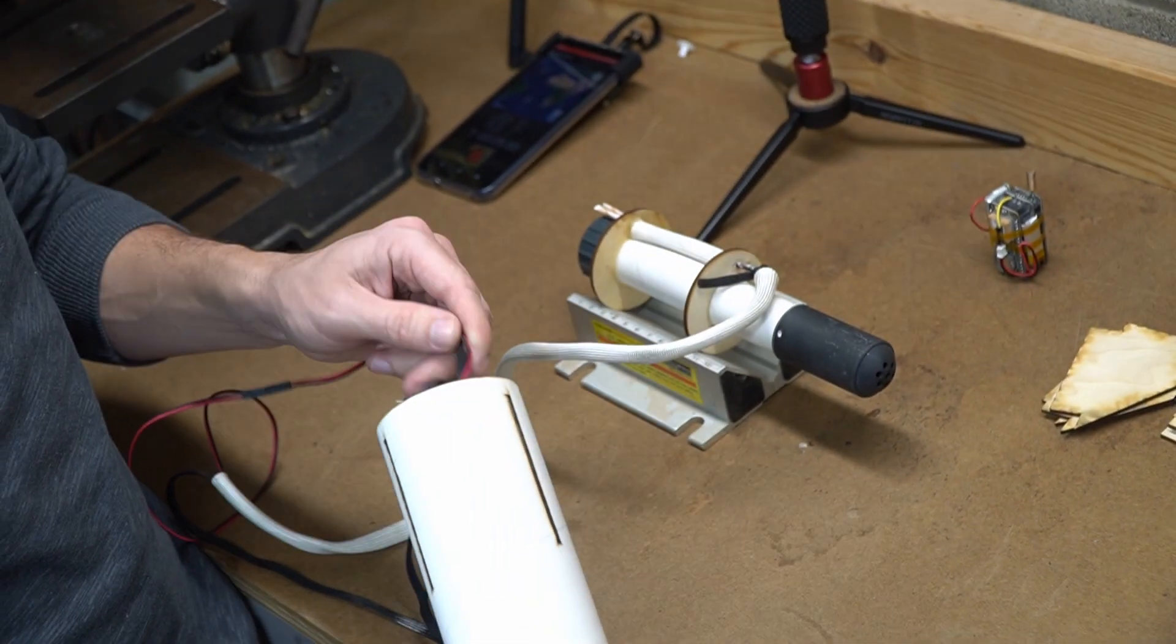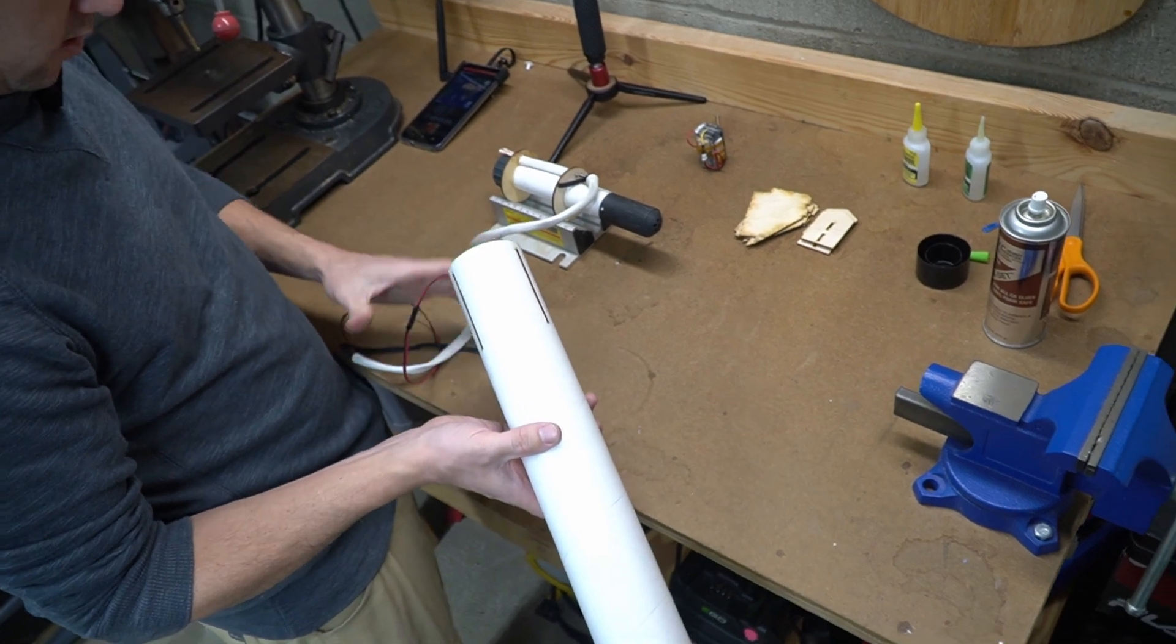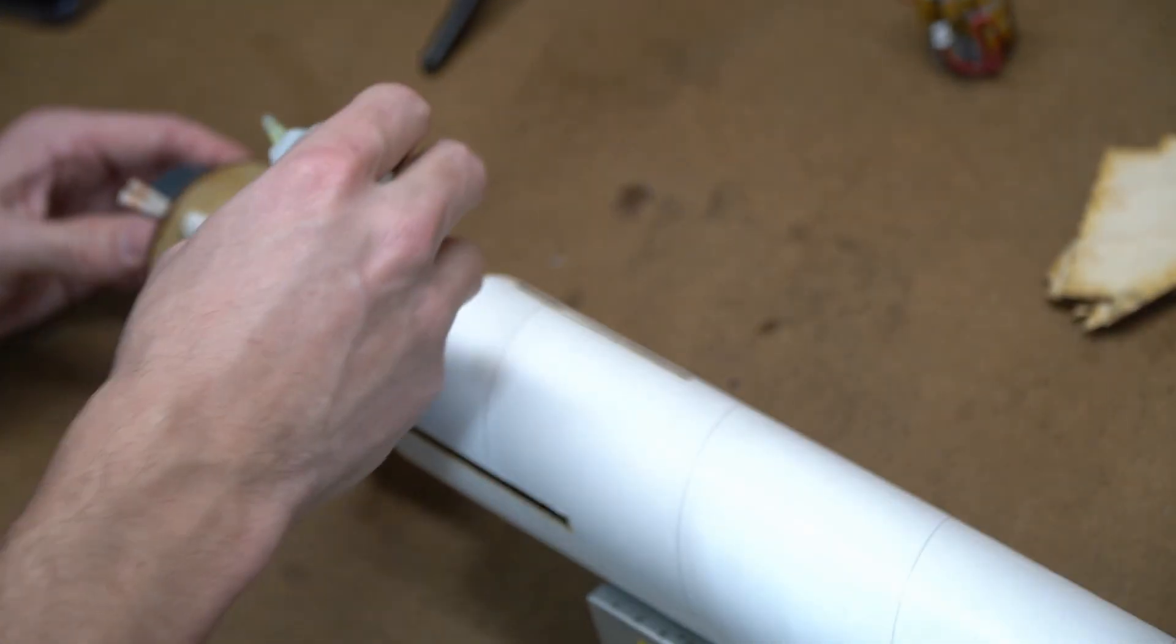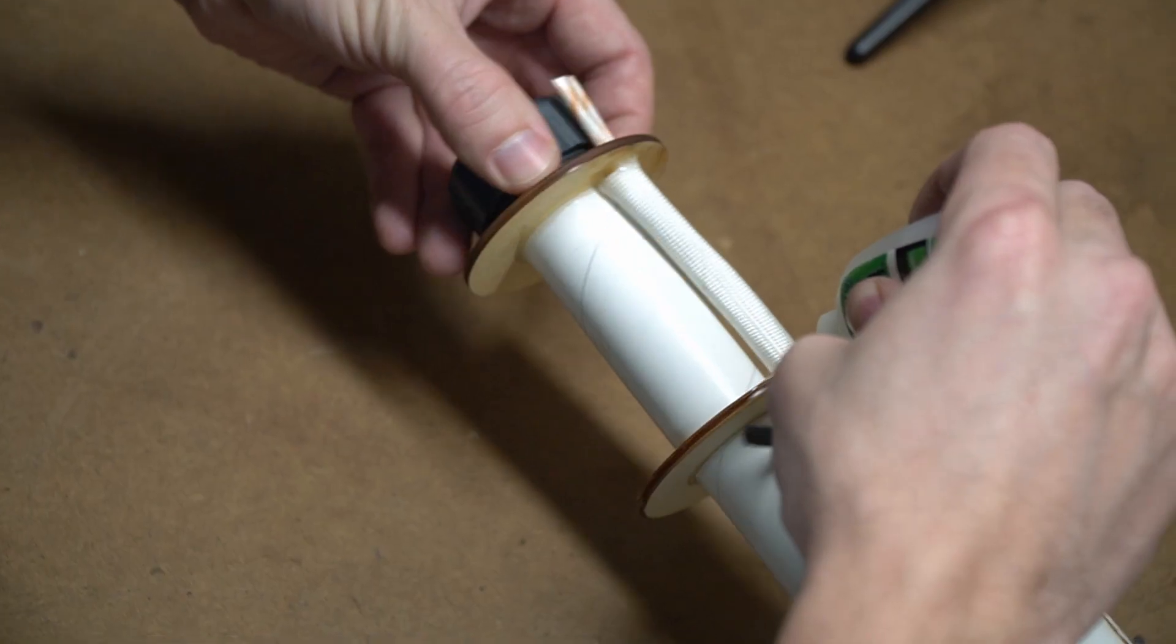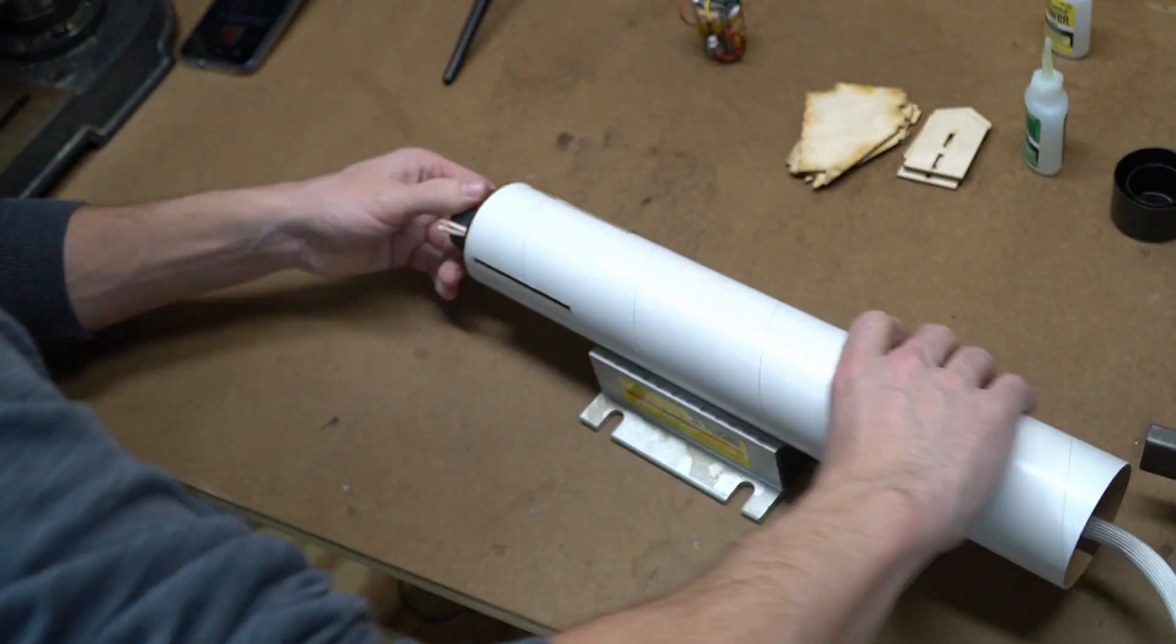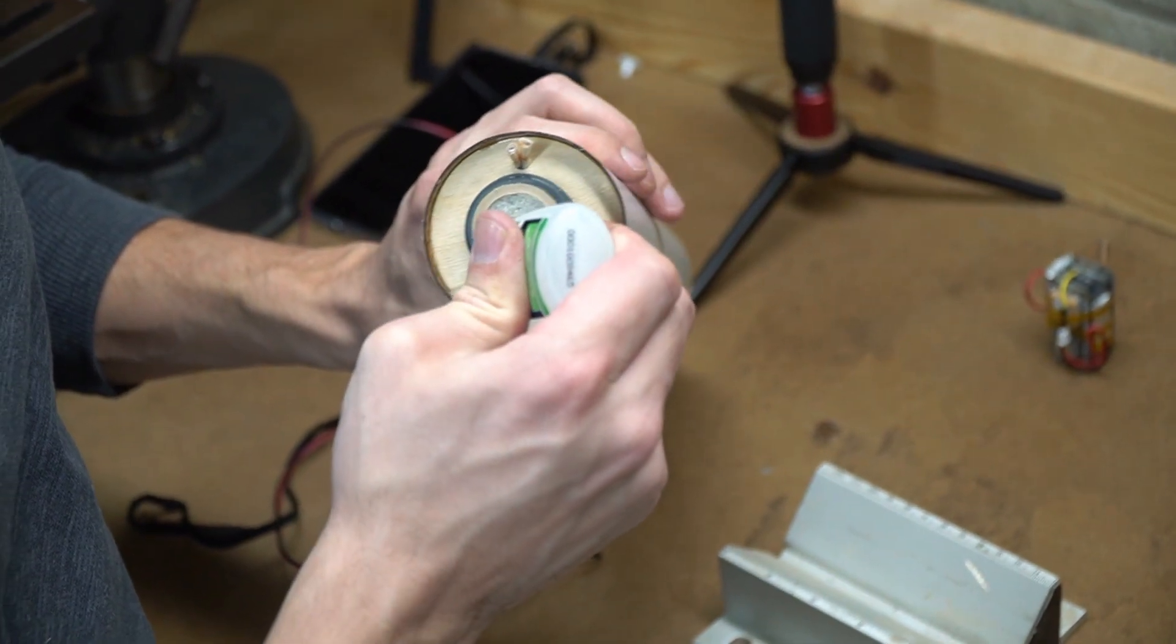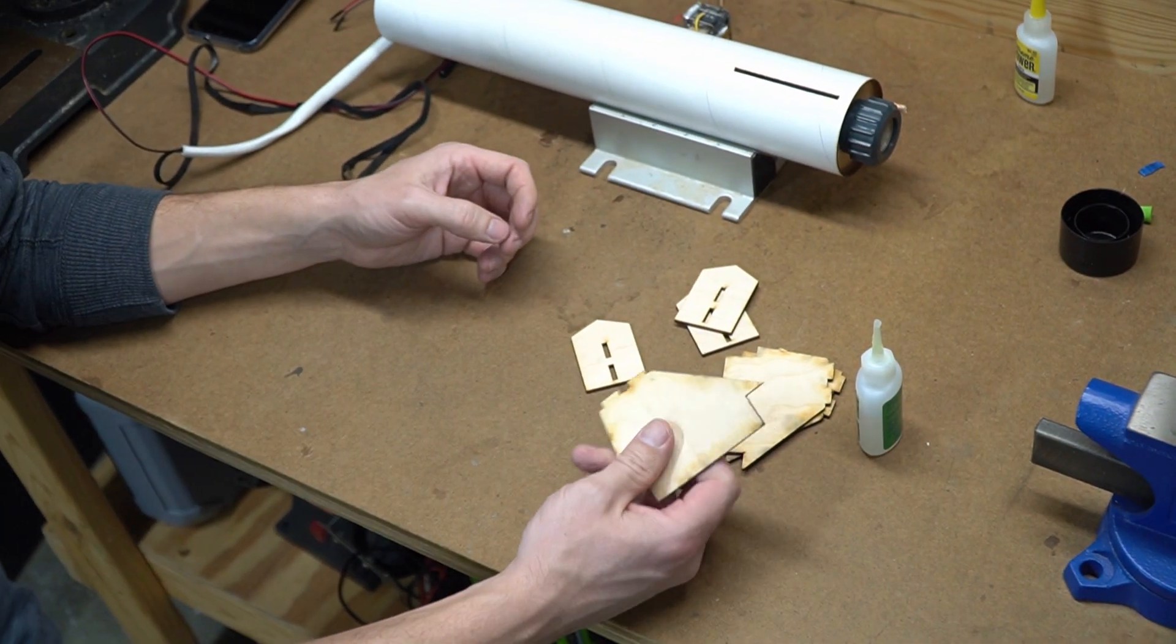Now I'm just going to feed the wires and the shock cord through the body tube. Then we're going to glue the motor mount into place. Add some glue before I put it in there. I'm just going to add the bottom end of this.